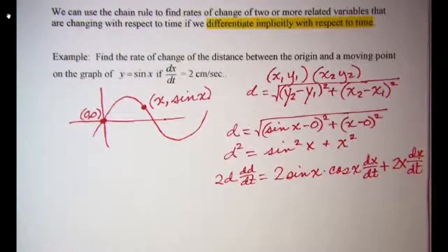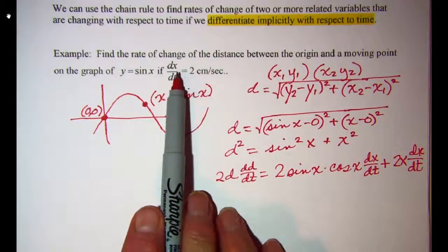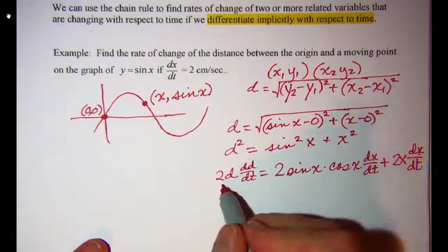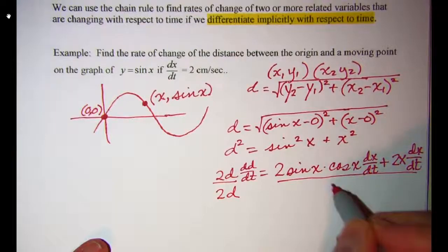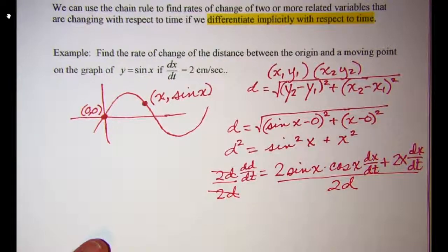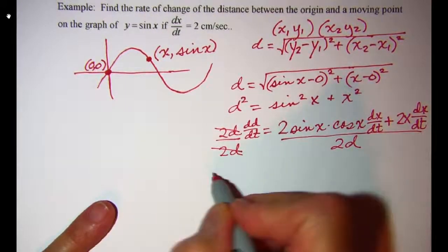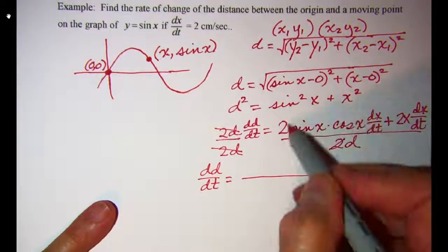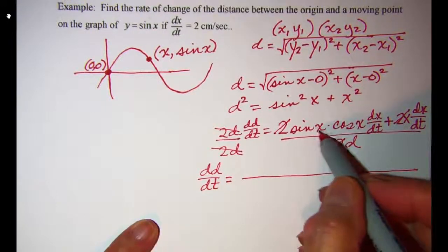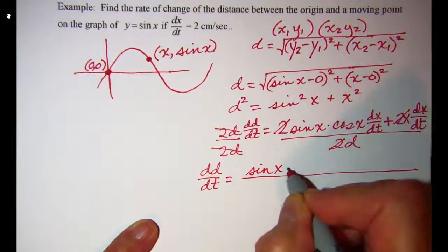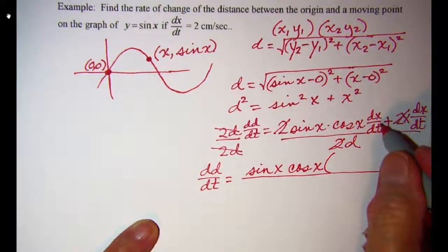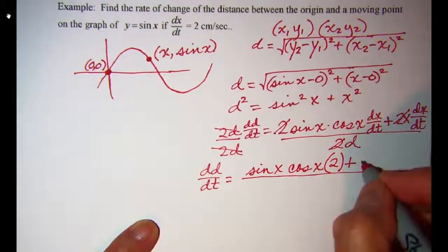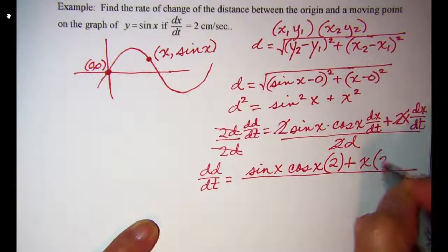Now that I've got the derivative, I can substitute in values that I know. I know that dx/dt is 2, and I'm looking for dd/dt, so I'm going to divide both sides by 2d. My 2 will cancel here, here, and here. So I have sine x times cosine x times dx/dt, which they give us as 2, plus x times 2 for dx/dt. They don't tell us about x, so we'll just write x.